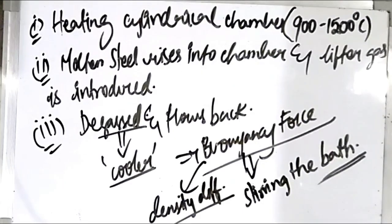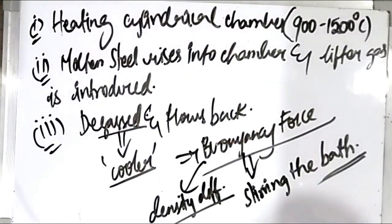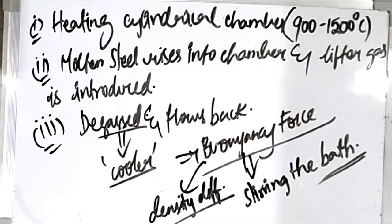After degassing, alloying element additions can also be made, similar to other degassing techniques. In DH degassing, only one snorkel is present and the whole chamber is moved up and down so that steel enters the vacuum chamber, gets degassed, and comes down. This cycle is repeated about 20 times so that the entire amount of steel is degassed. Both RH and DH are similar but differ in this regard.